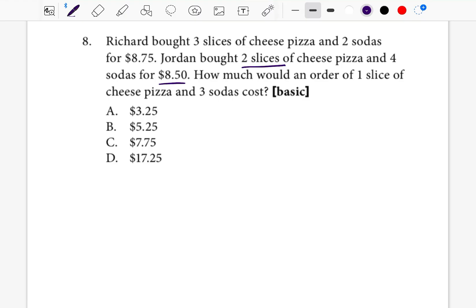Ultimately, we're going to want to know how much pizza costs and we want to know how much sodas cost. So I'm going to go ahead and put that in my little box in the corner of my page. And now I'm going to write a statement for Richard and then I'm going to make a statement for Jordan. So Richard bought three slices of pizza, so I'm going to write 3P, and represents addition, two sodas, so 2S, which equals $8.75.